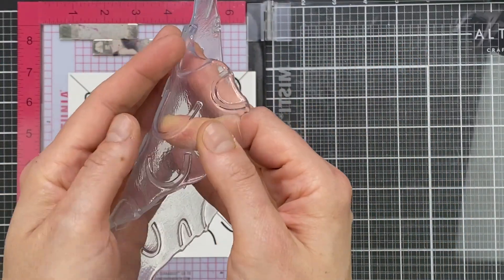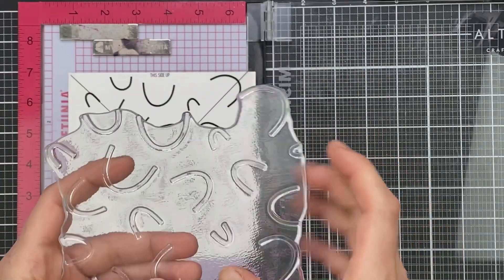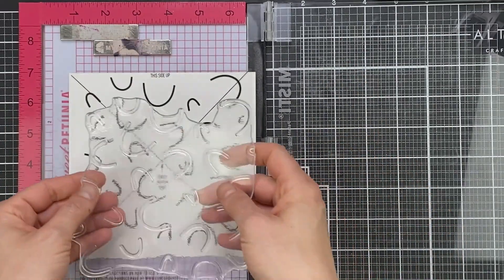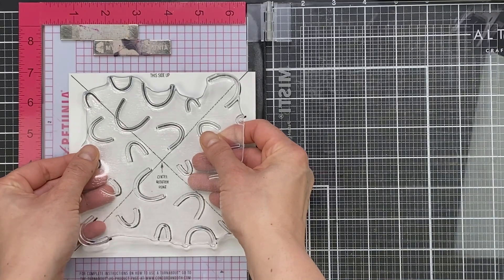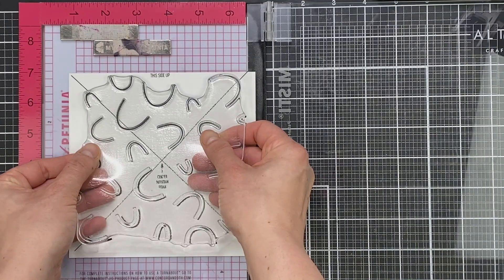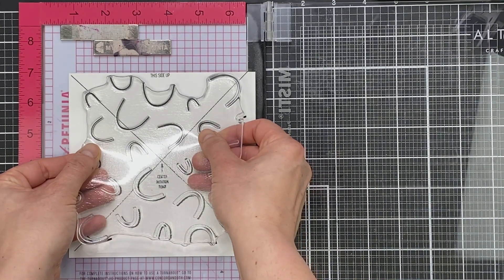So I'm using the turnabout jig. I've placed it in my MISTI down in the bottom corner, and then I'm using this rainbow turnabout stamp. It comes with this sheet of acetate that is actually your guide for placing your stamp.